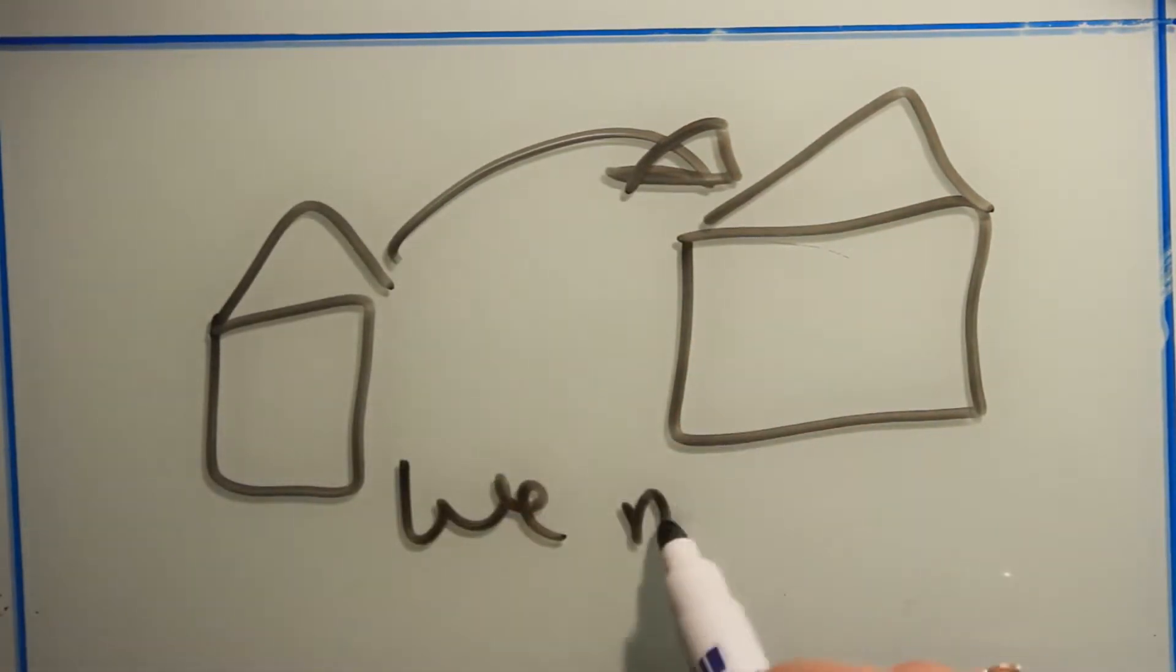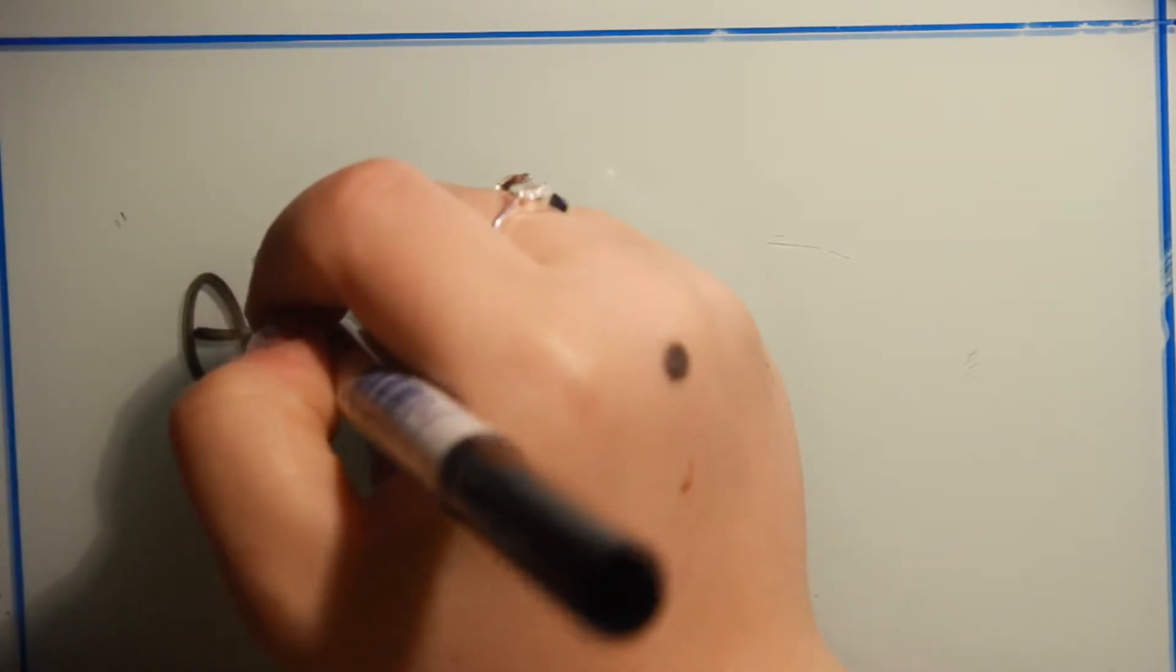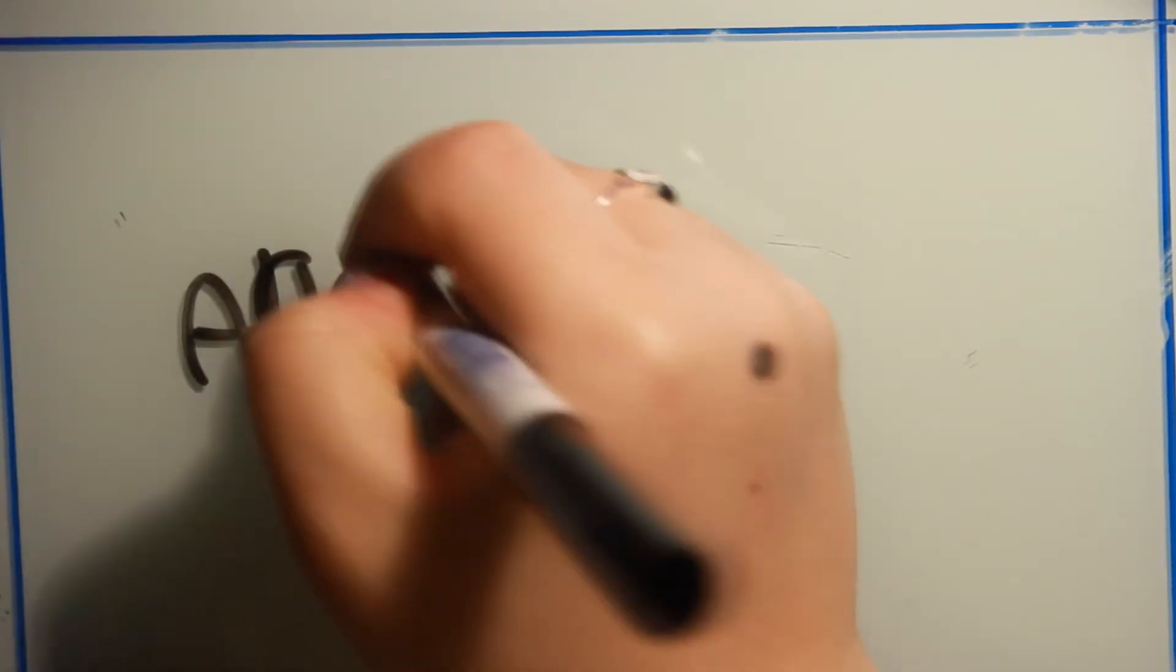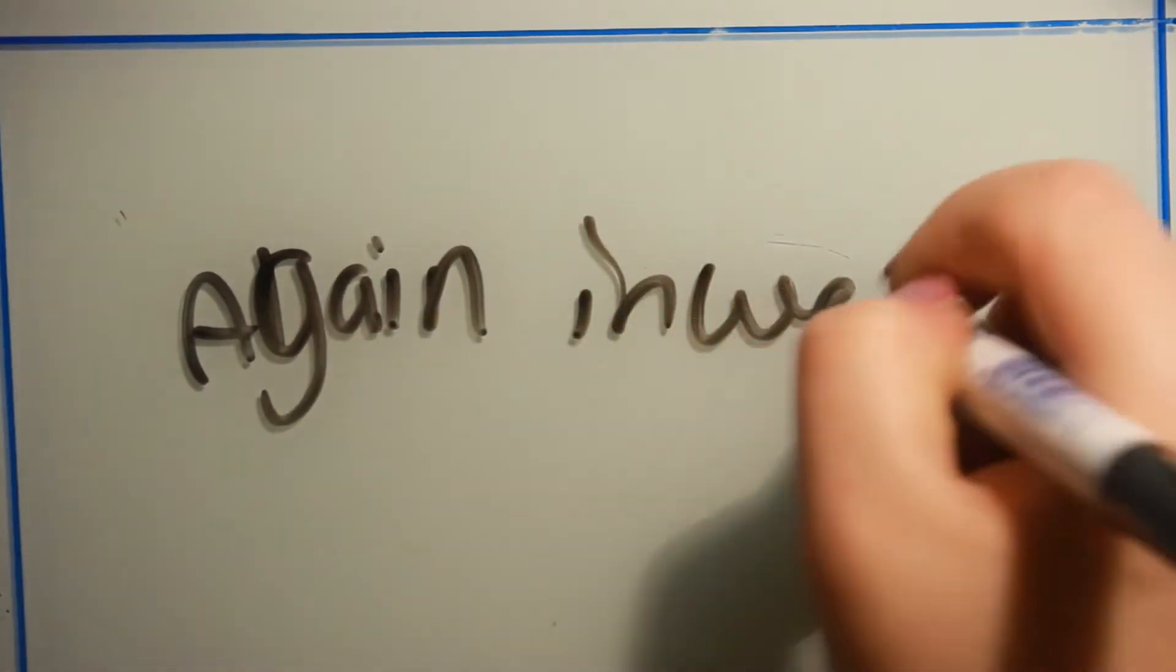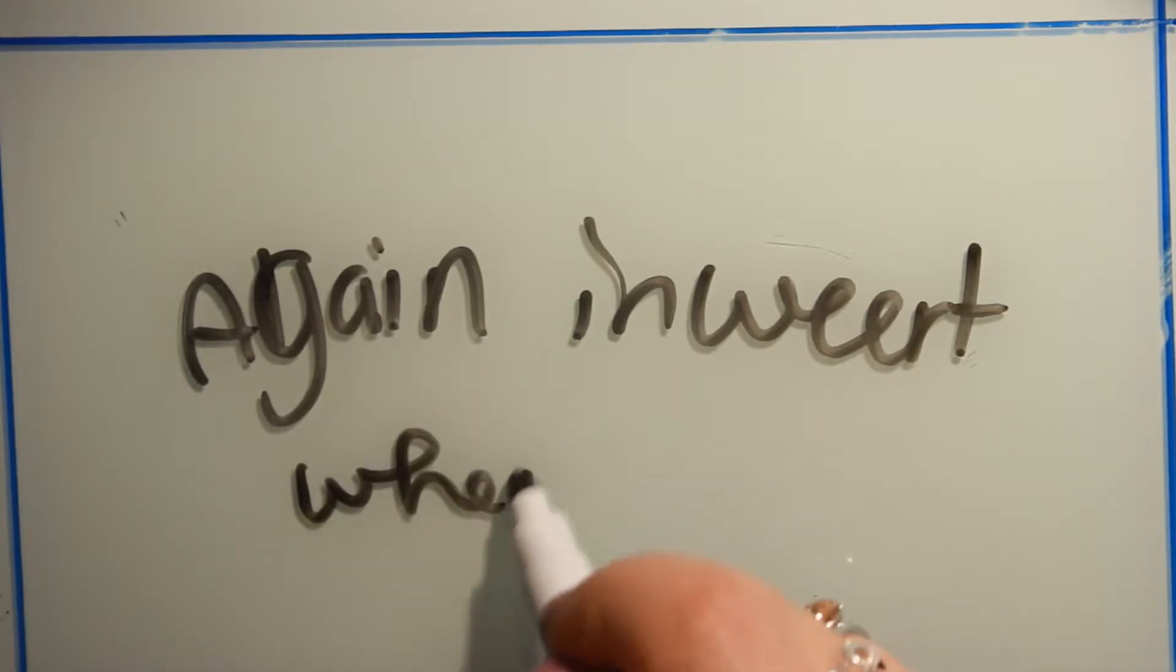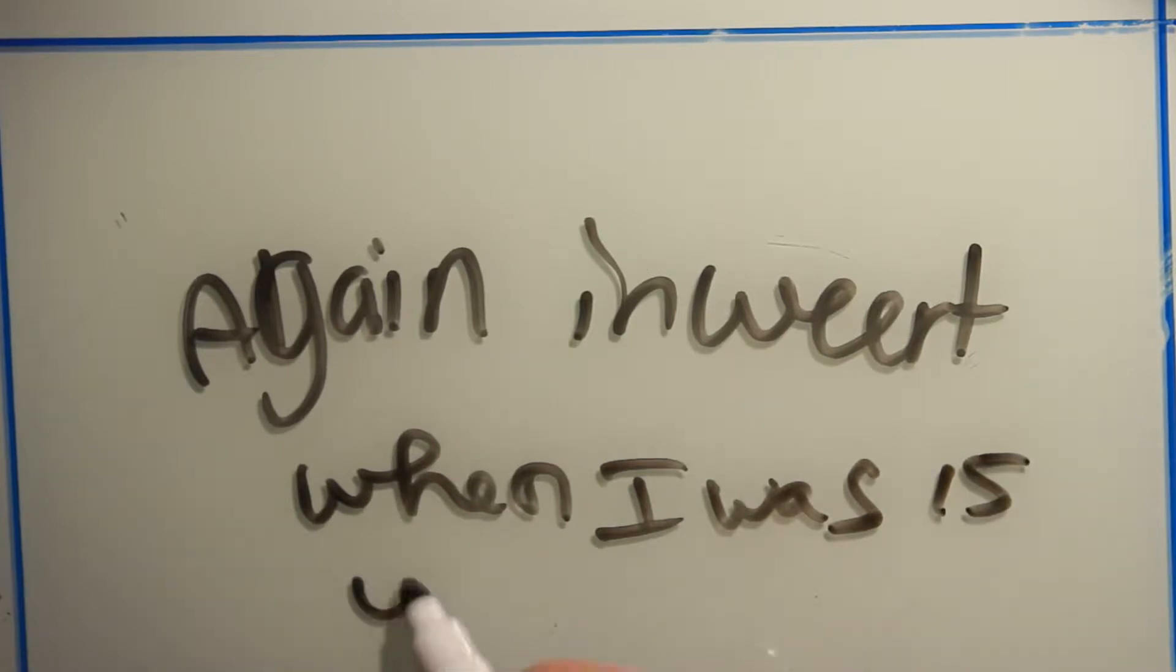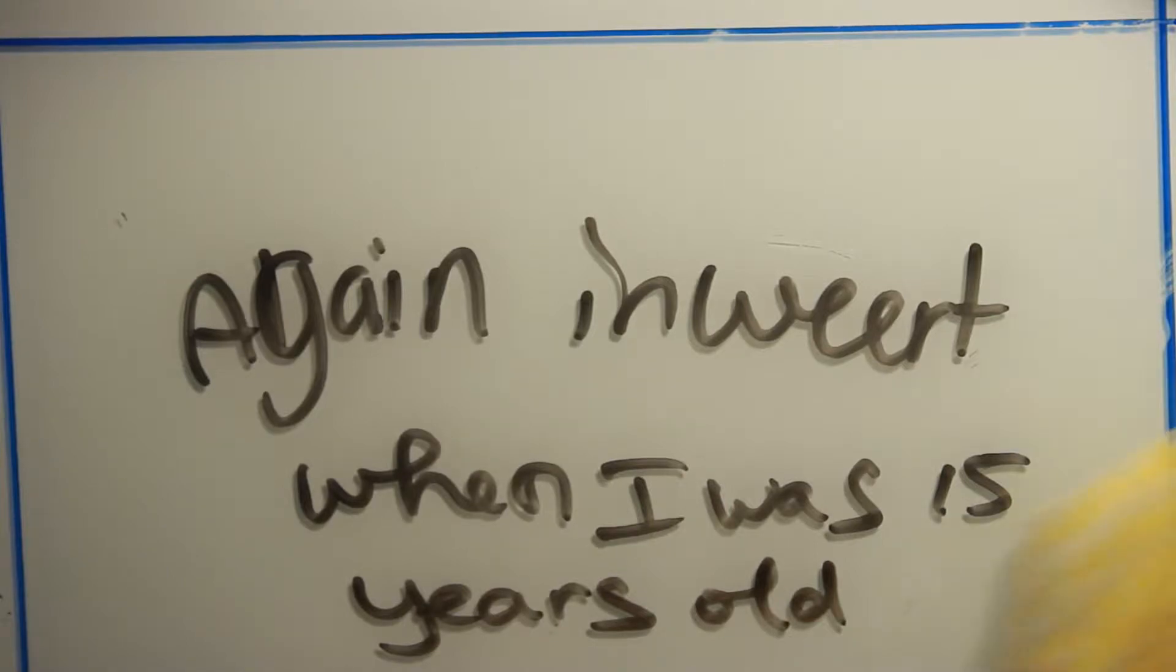After a few months we decided to move again and at the moment I was 15 years old. For a side note, we moved five times in the same city so I went to a lot of different schools. It was difficult for me to make new friends, and because of my parents deciding to move a lot I needed to make new friends every time.